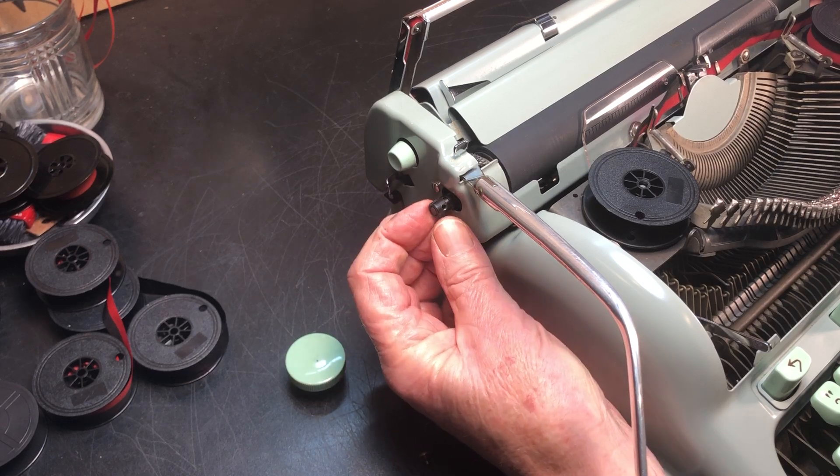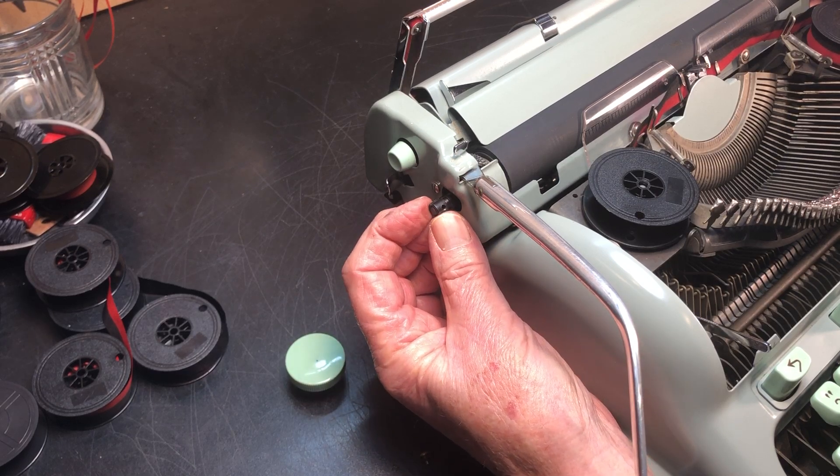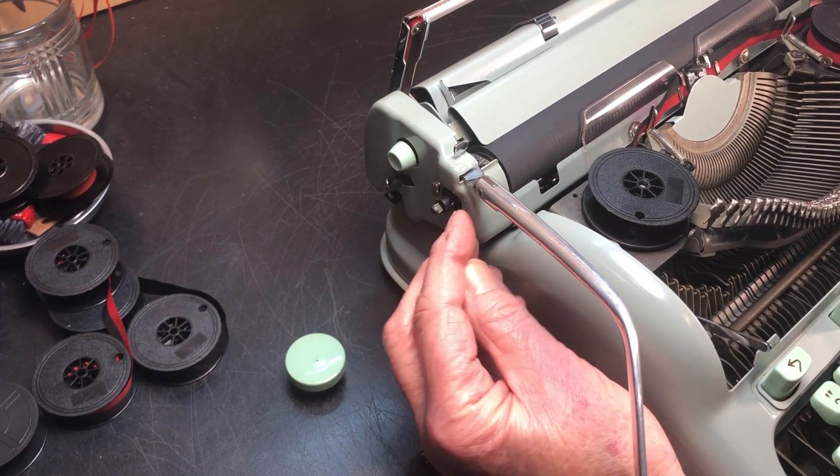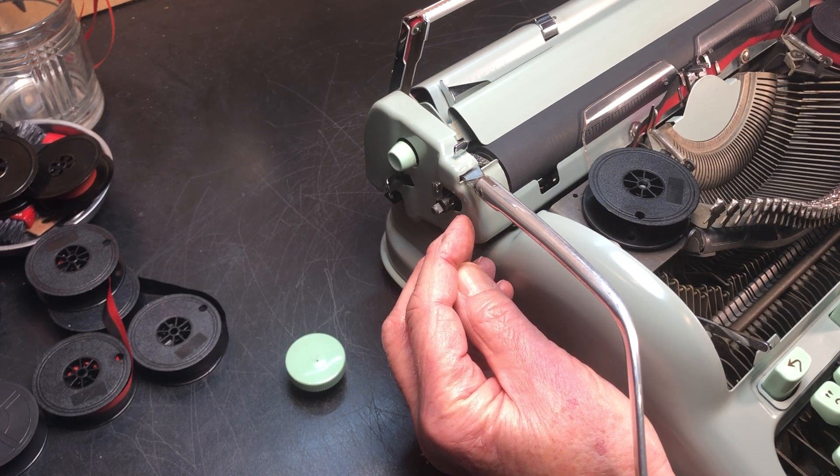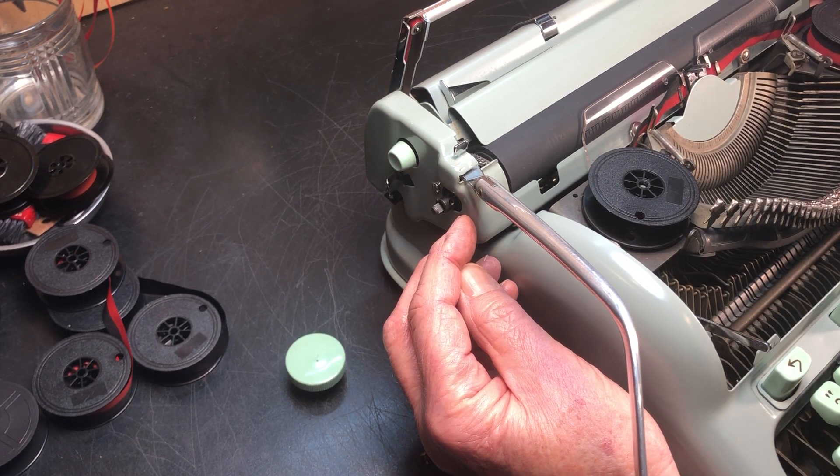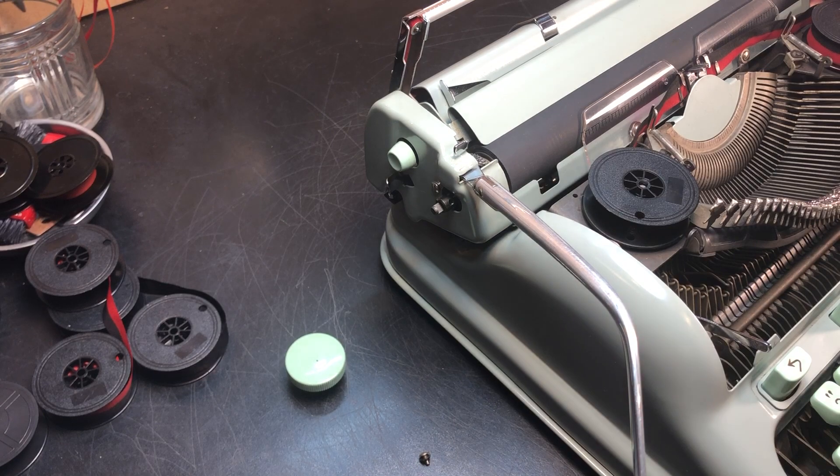When this pushes in, this hub is on the platen shaft. When it goes in, there's two springs inside there, little leaf springs, that engage the ratchet.